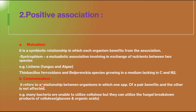For example, many fungi are able to break cellulose down to glucose and organic acids, but bacteria do not have the capacity to break down cellulose directly. However, the bacteria can utilize the fungal breakdown products — glucose and organic acids. Here the bacteria benefits from the fungi, and the fungi is neither affected by the bacteria. This is commensalism.